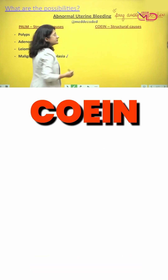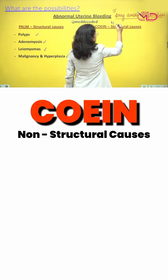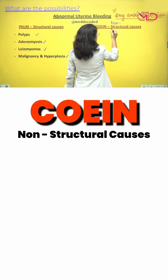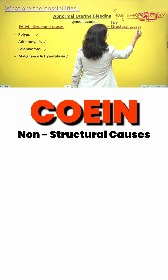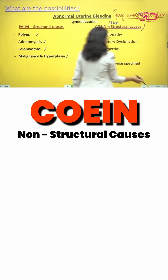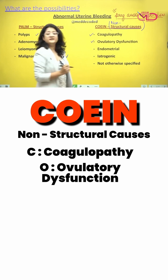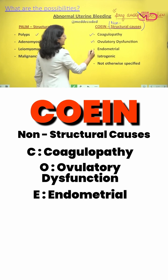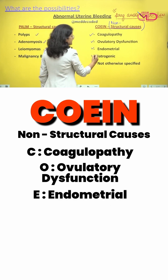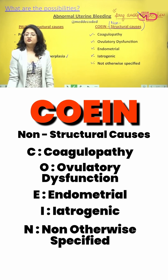COEIN represents the non-structural causes, where you can have coagulopathy, ovulatory dysfunction, endometrial causes, iatrogenic causes, and eventually not otherwise specified.